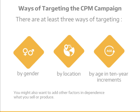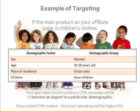Pick the low-hanging fruit — the people who are most likely to buy, or the keywords most likely to be used by people interested in your offer. That may cut out other potential customers, but it will give you the best returns for your CPM budget. You'll want to target your CPM campaigns in at least three different ways: by gender, by location, and by age in 10-year increments. Depending on what you're selling, you may also want to add other factors such as children or interests. If the main product on your affiliate page is children's clothes, you'd want to make sure you were targeting mothers — the people most likely to buy. Facebook is one site that lets you do that.